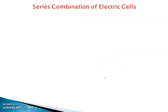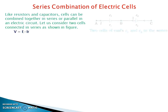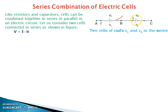Now we are going to discuss combinations. There are two types of combinations in electric cells: series combination and parallel combination. In series combination, the negative terminal of the first cell is connected to the positive terminal of the second cell. In this figure, there are two cells of EMF E1 and E2 with internal resistances R1 and R2 connected in series.